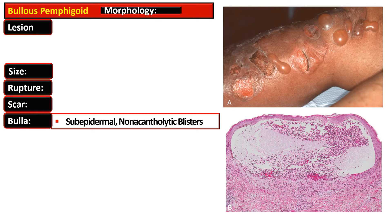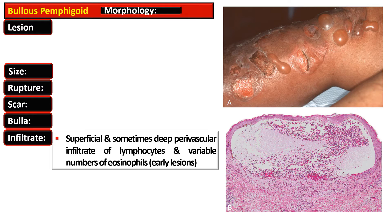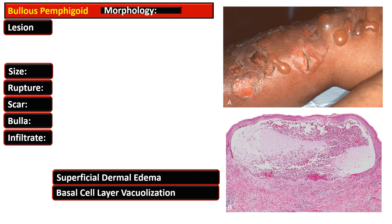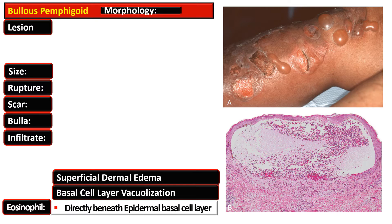These bullae are sub-epidermal and non-acantholytic blisters. The infiltrate is usually superficial, and sometimes there is a deep perivascular infiltrate composed of lymphocytes and a variable number of eosinophils, especially present in early lesions. There is superficial dermal edema and vacuolization of the basal cell layer. Eosinophils are typically present.